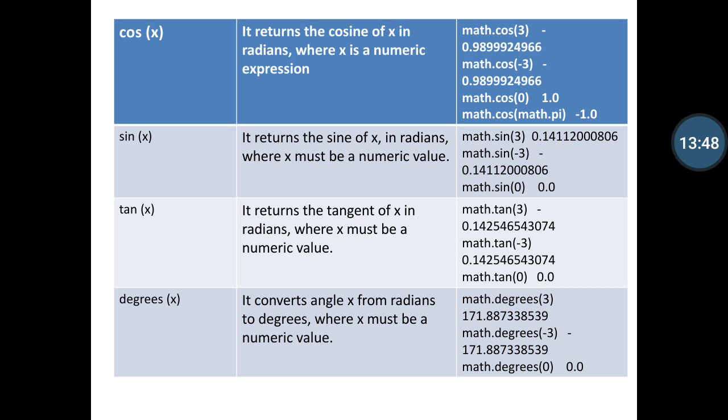Then we can use degree function also as a mathematical function. It converts angle x from radian to degree where x must be a numerical value. The example shown here: math.degrees(3). It calculates the degree of 3: 171.887338539. When you execute it in your Python environment, the result is shown as described in the slide.